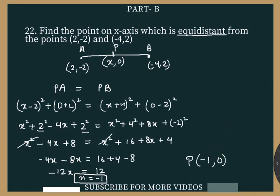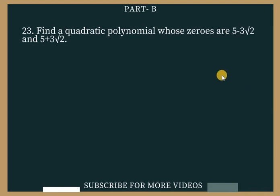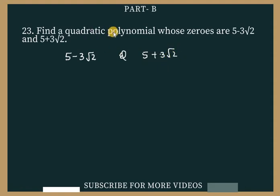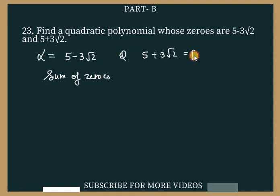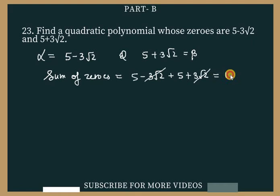Let's do question number 23. Here we are given two zeros: 5 - 3√2 and 5 + 3√2, and we have to form a quadratic polynomial. To form the polynomial, first we find the sum of zeros: (5 - 3√2) + (5 + 3√2). The 3√2 terms cancel, giving sum = 10.